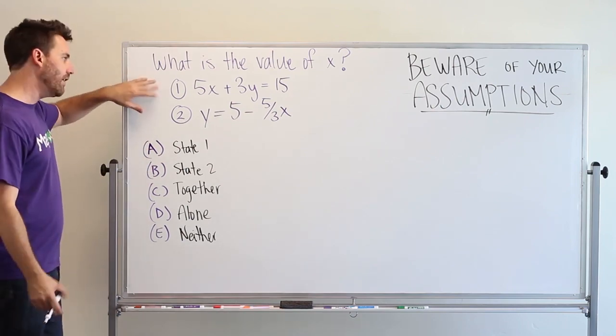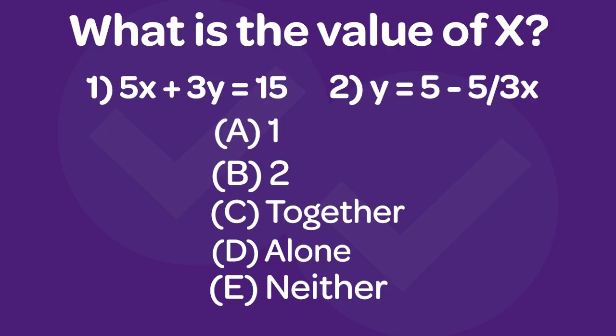So we can quickly eliminate a couple of answer choices. I can see in statement one I'm not going to be able to figure out what the value of x is because I still have this y. So eliminate A. Look at statement two, again same thing, have two variables. I'm not going to know what the value of x is with that y in there.